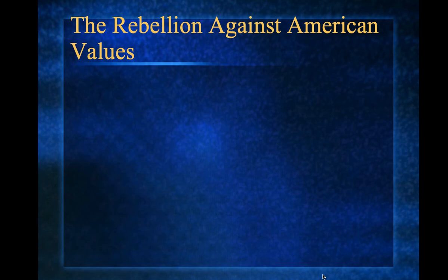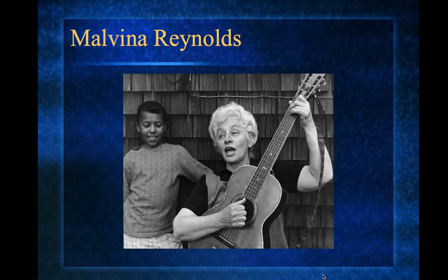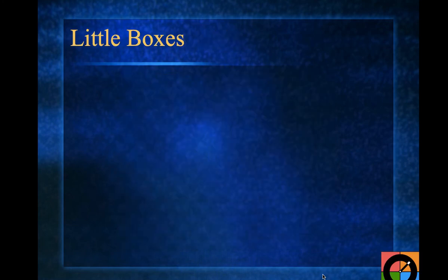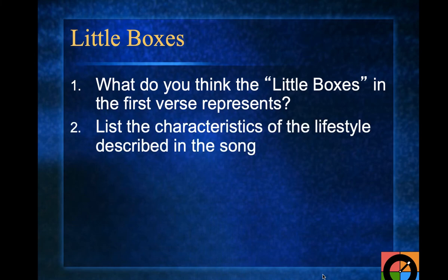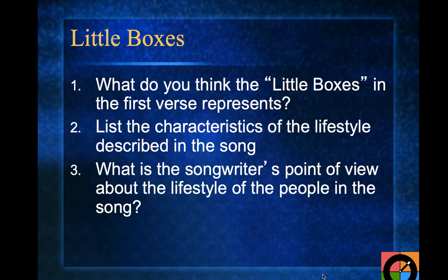If you want to take a look at a protest song against 1950s conformity, check out Malvina Reynolds' 'Little Boxes.' It's a catchy song with a social message behind it. As you listen, think about what the 'little boxes' in the first verse represent, list the characteristics of the lifestyle described, and consider what the songwriter's point of view is about that lifestyle. This is just for you — go ahead and pause the video to listen to that song if you'd like.